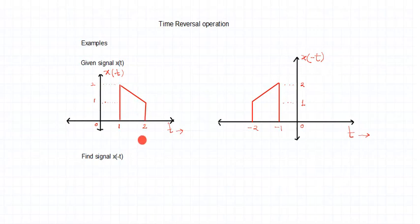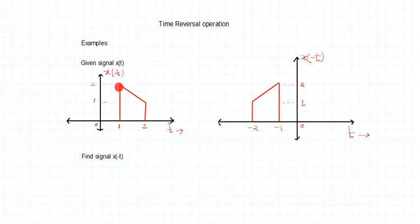Whatever is there on the positive axis, put it on the negative axis. At plus 1 the magnitude was 2, so at minus 1 we draw a magnitude of 2. At plus 2 the magnitude was 1, so at minus 2 we draw a magnitude of 1. Simply join the points — this is your reflected signal, the time reversed operation. Magnitudes are not reversed; only the time position is reversed.